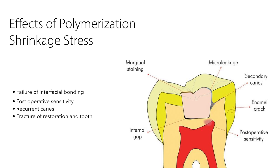What is so bad about polymerization shrinkage? If composites are not placed as recommended, they end up with a variety of post-restoration problems, including marginal staining, microleakage, secondary caries, enamel cracks, post-op sensitivity, and internal gaps — because of failure of interfacial bonding as a result of shrinkage pulling the material from the bonded wall, leading to complete or partial bond failure at the dentine-restorative interface. Post-op sensitivity results from open pathways toward dentinal tubules, increasing fluid movement.